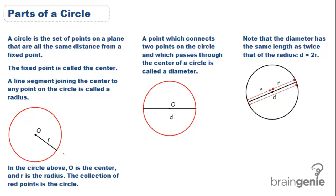Any line segment joining the center to any point in the circle is called a radius. And we know that the radius is always going to be the same no matter what point it's at because that's the definition of a circle. In this circle, O is the center and r is the radius.